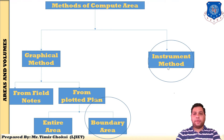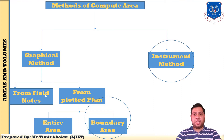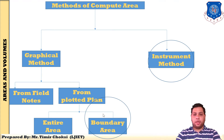The topic is methods of computing the area. There are two major methods: graphical method and instrument method. In the graphical method there are two sub-methods: from field notes and from plotted plan. After conducting chain survey, compass survey, you make field notes and then find the area. In a plotted plan there are two types: entire area and boundary area. In this chapter, focus is on boundary area and the instrument method.